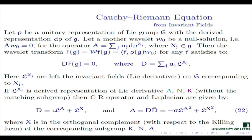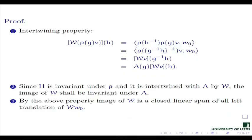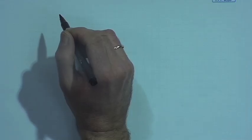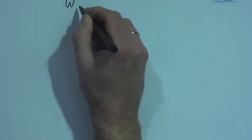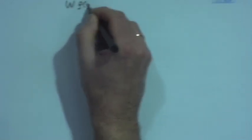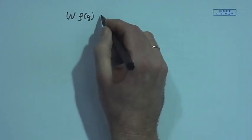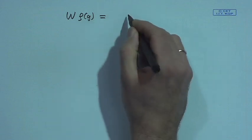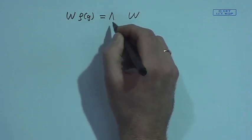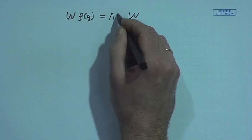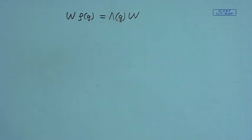Again, on the previous lecture, when we defined the wavelet transform, we stated its intertwining property. So when we have a wavelet transform followed by the group representation, it is the same as doing the wavelet transform and following it by the left shift on the group. That was the simple property which we demonstrated on the previous lecture.